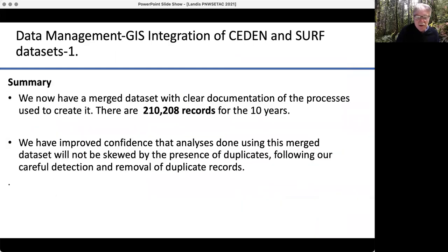The data management has been a huge effort. In California, there's the CEDEN and SURF datasets, and so we are now putting those together for the last 10 years. We start with about 210,000, but there are a number of duplicates. So right now we have slightly under 100,000 records or entries into the information, which is a fairly large dataset to work with.